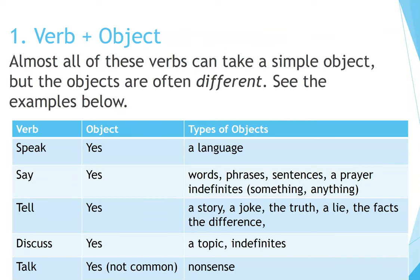Number 1: Verb plus object. Almost all of these verbs can take a simple object, but the objects are often different. Speak takes a language. Say takes words, phrases, sentences, a prayer, or indefinites such as something or anything.